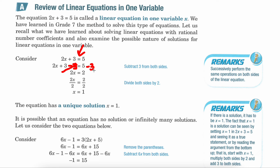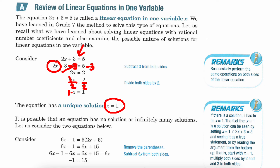After we subtract 3 from both sides, we get 2x remaining on the left-hand side, and 5 minus 3 equals 2 on the right-hand side. Then if I need to isolate x, I see that it is being multiplied by 2, so the opposite operation would be to divide by 2. 2 divided by 2 is 1, so it's technically 1 times x equals 1. So the answer is x equals 1. We say that it has a unique solution, meaning that it has one solution.